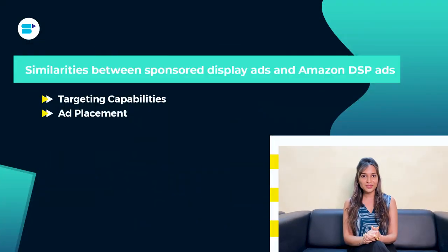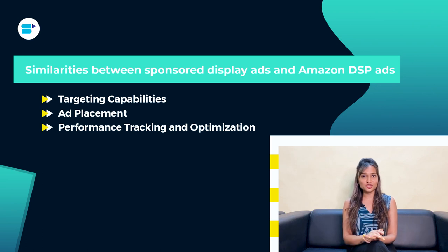Ad placement is another similarity. Sponsored Display ads appear on product detail pages, customer review pages, and in search results. Amazon DSP allows display across ad formats including video ads and even on Amazon devices like Kindle. For instance, with new kitchen appliances you can use Sponsored Display on relevant product pages, or use Amazon DSP to showcase engaging video ads on Kindle Fire tablets. Both options also offer performance tracking and optimization tools — providing metrics like impressions, clicks, and conversions, with DSP providing advanced reporting including detailed demographic data.